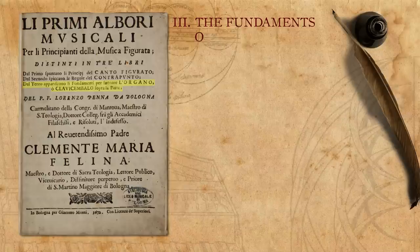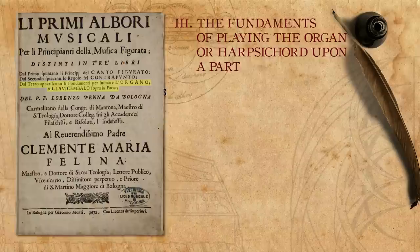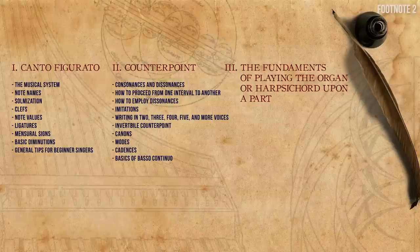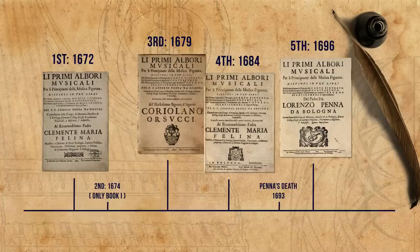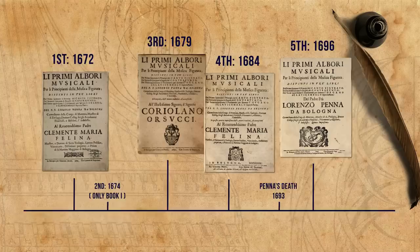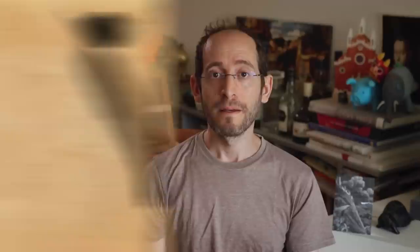Only after presenting all of this comes the third part, dedicated fully to basso continuo — the fundaments of playing the organ or harpsichord upon a part. Putting this as the third part allows Penna to be sure that the beginner basso continuo student is already experienced in singing and knows sufficient counterpoint. The book was reprinted several times, with the fifth edition published after Penna's death. Some editions are said to have been revised and enhanced by the author, and we will mention later some of the very interesting revisions made by Penna.